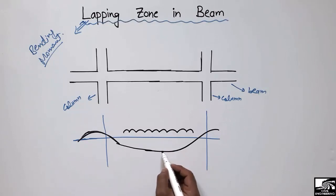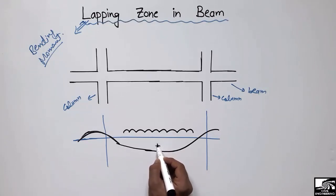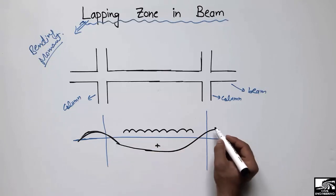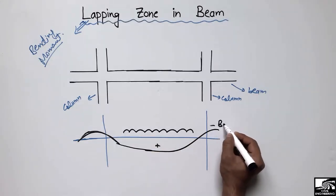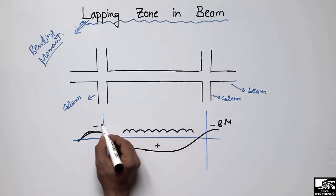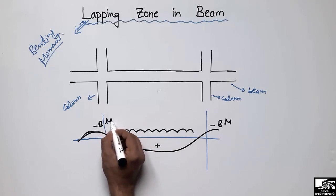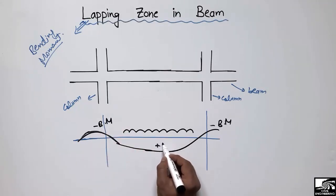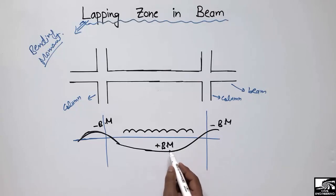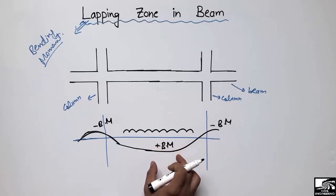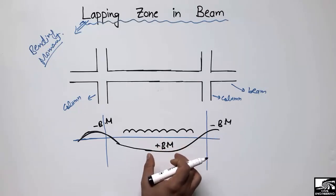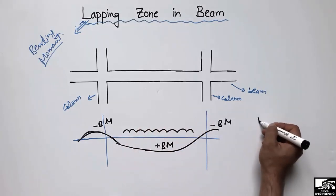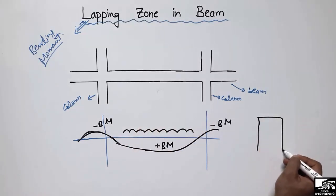So due to this load, the beam will show positive bending moment at the mid-span, and negative bending moment at the two supports. At the mid-span it shows positive bending moment, so depending on the bending moment diagram we should avoid the lapping in the beam. Let's also consider the cross section of the beam.